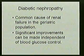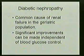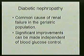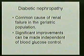Significant improvements in diabetic nephropathy can be made independent of blood glucose control through other management methods like use of ACE inhibitors and significant blood pressure management — especially targeting blood pressure below 130/85 mmHg. These help much more than diabetes control in the outcome of diabetic nephropathy.